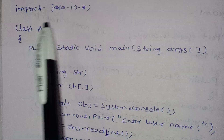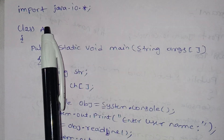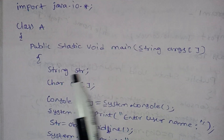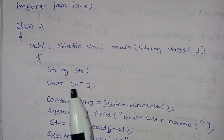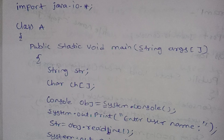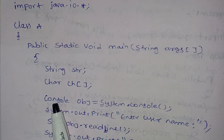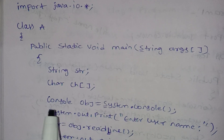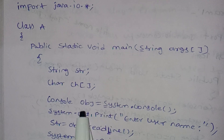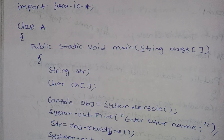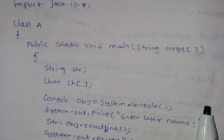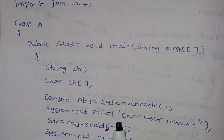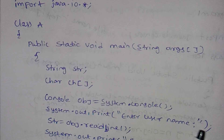Guys, here we are going to import java.io.*. Class A is the class name. Public static void main is the main function to start the program. Next, String str — we initialize string str. Char ch — this is the char array for RFA arguments. Console — this is the class. We call the object. We have read line and read password methods. System.console — system.out.print: enter username.